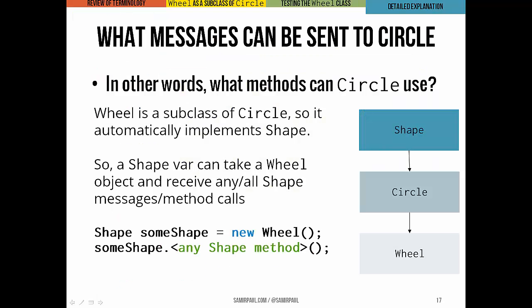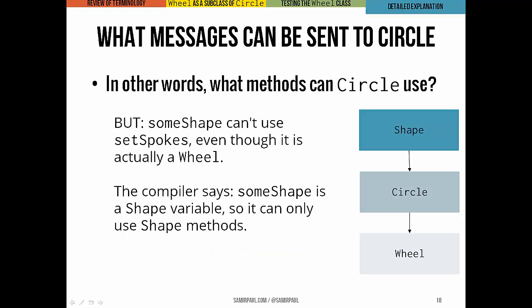Now because Wheel is a subclass of Circle, it automatically implements Shape. That's what we said before. So that means we're actually allowed to take a variable of type Shape and instantiate it as a new Wheel object. And then we can use any Shape method that we want. So here's an example of that, we can say Shape, some shape equals new Wheel. So again, we're pointing a Shape variable at a Wheel object, and then we can call any Shape method using that Shape variable, knowing that we'll call whatever version of it is implemented in Wheel. But there's some complication here. Some shape can't run Wheel methods specifically. For instance, the setSpokes method, that's not a Shape method. So if we have a Shape variable, it doesn't matter that some shape actually points to a Wheel object. It's a Shape variable, so it can't run a Wheel method. From the compiler's perspective, some shape can only call methods that are in the Shape interface.